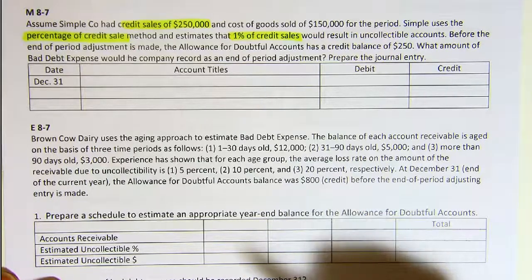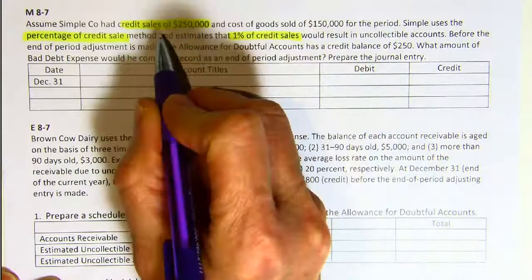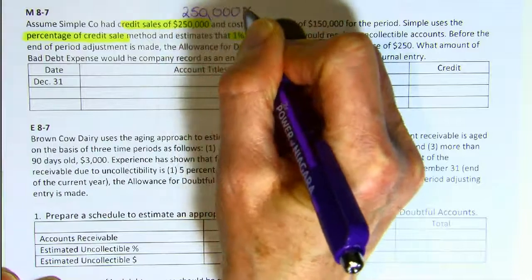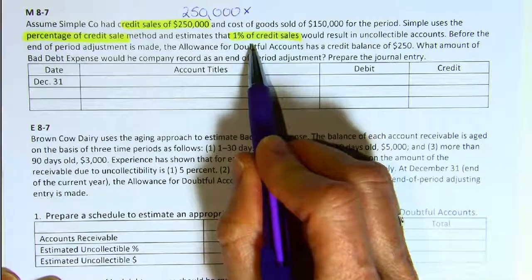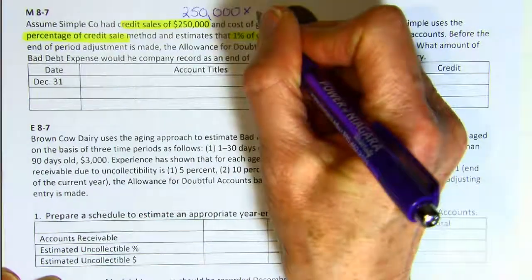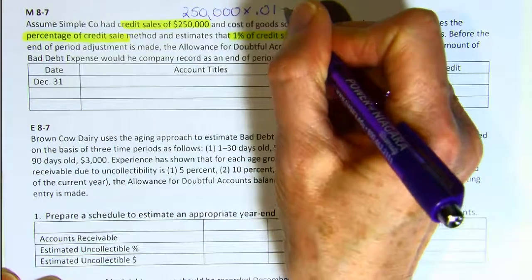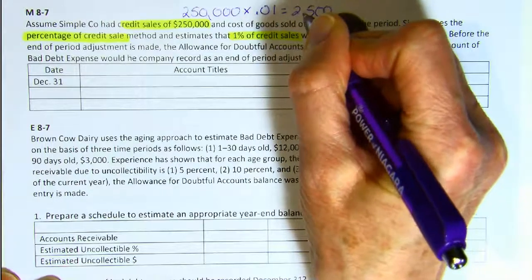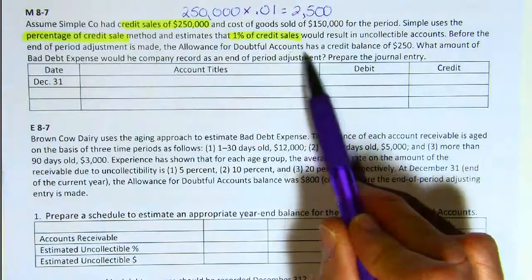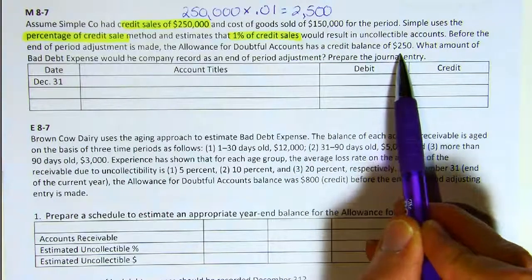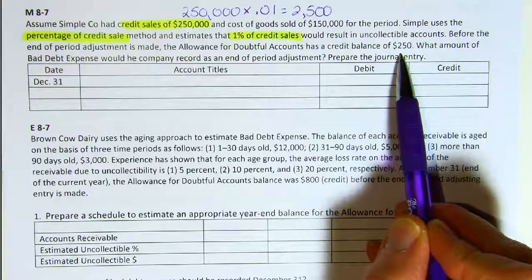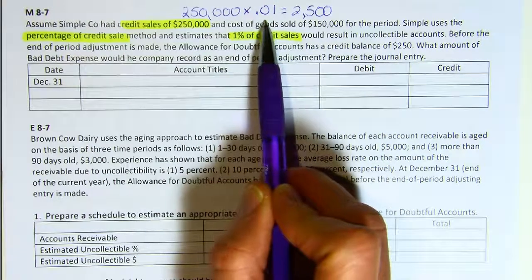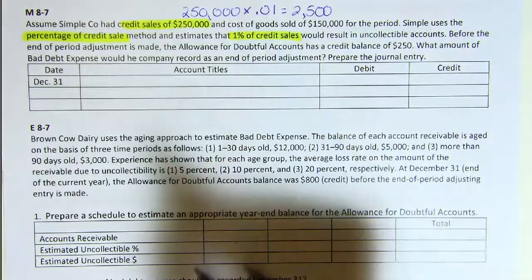The way we calculate that is we multiply the credit sales times the percent we think we won't collect — 1% or 0.01 — and that gives us $2,500. We don't care what the balance of the allowance for doubtful accounts is before adjustment; that doesn't factor into this method. You simply multiply the credit sales times the historical percent of uncollectibility and make the journal entry.